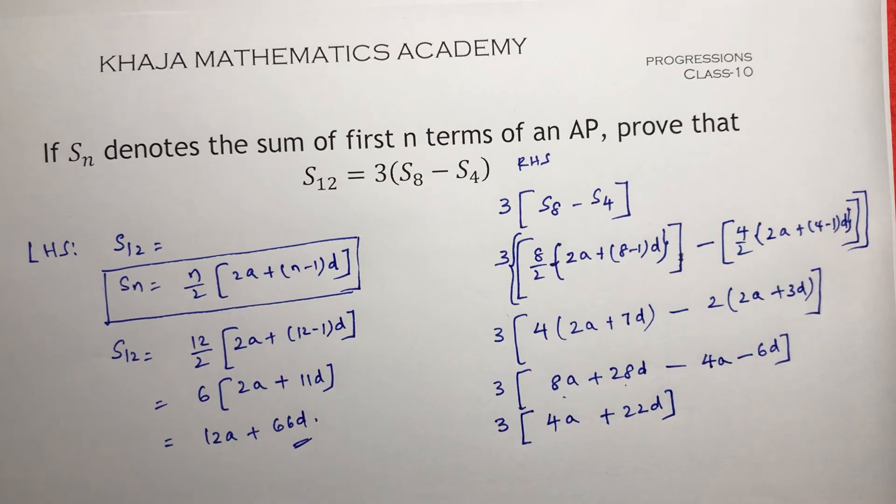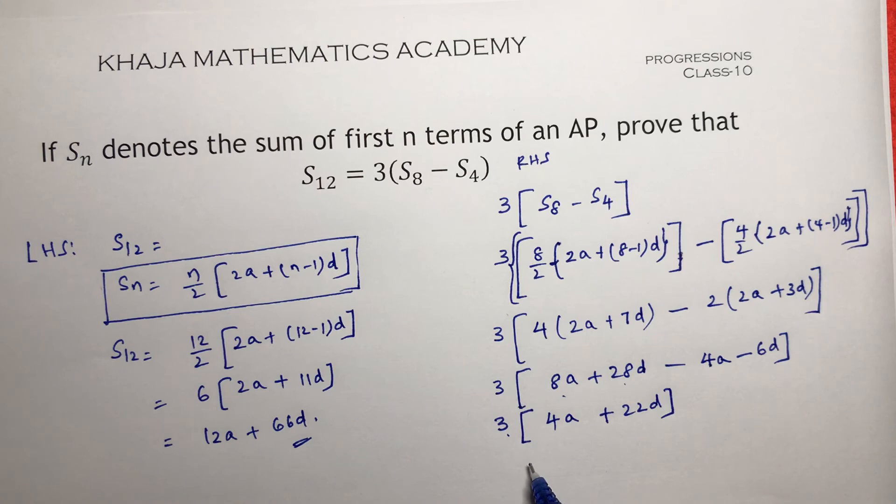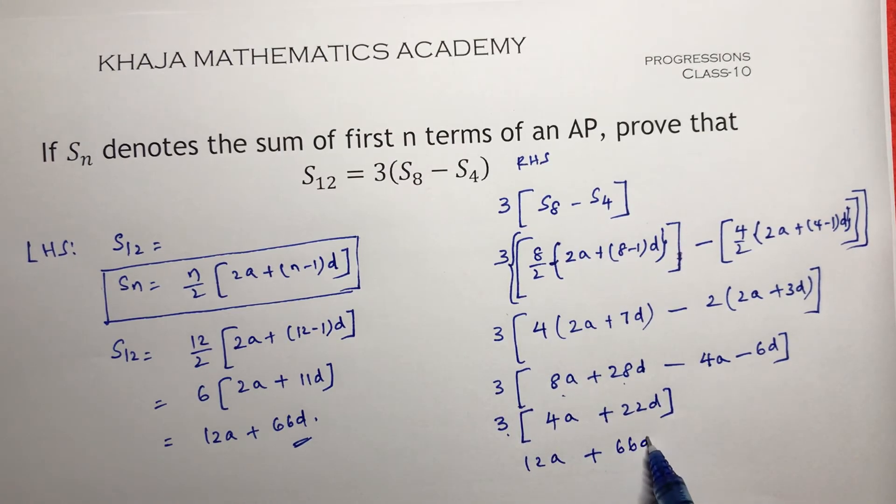If I multiply, 3 times 4 is 12A and 3 times 22 is 66D.